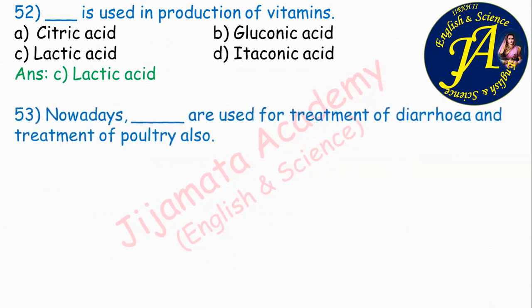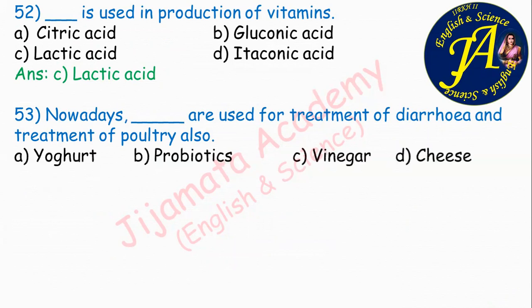Nowadays, dash are used for treatment of diarrhea and treatment of poultry. Options are yogurt, probiotics, vinegar, cheese. Correct answer is probiotics. Yogurt or curd is a natural probiotic. Doctors suggest curd when patients have diarrhea or abdominal pain. Probiotics is the correct answer.